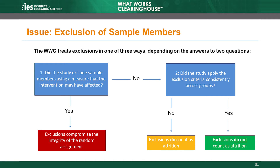Another issue to consider is that researchers sometimes exclude units from their analysis. If doing this creates differences between the intervention and comparison groups, it could introduce bias. The WWC uses two questions to determine whether an exclusion has the potential to introduce bias.